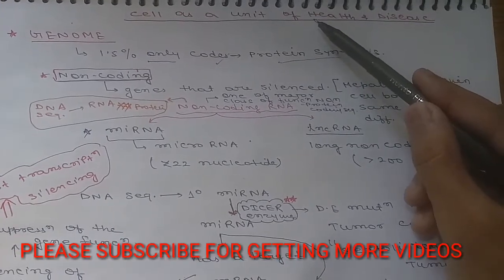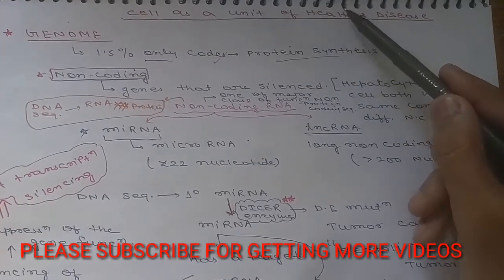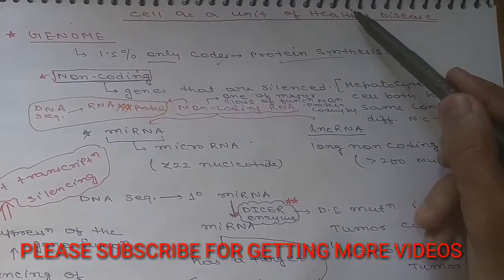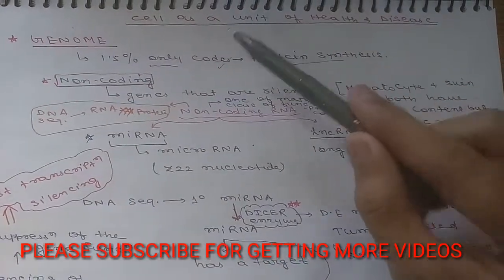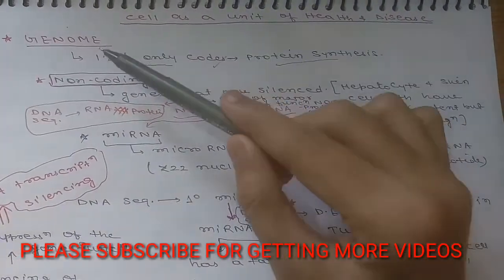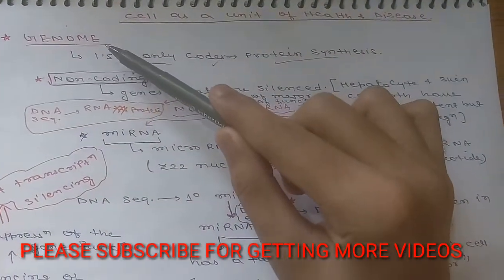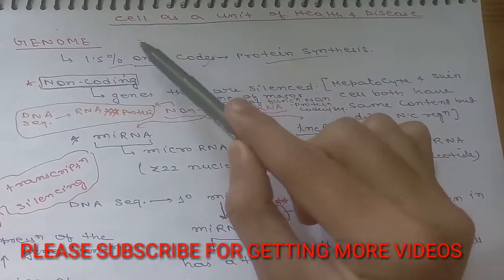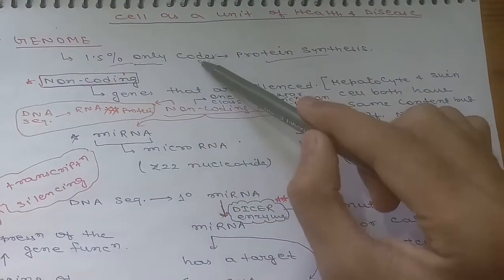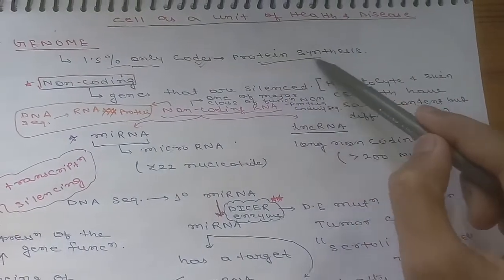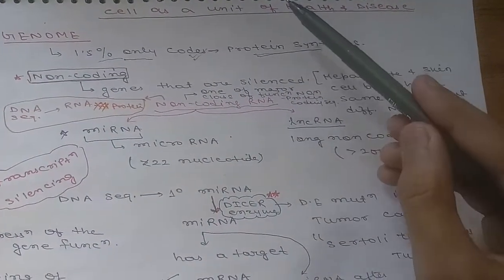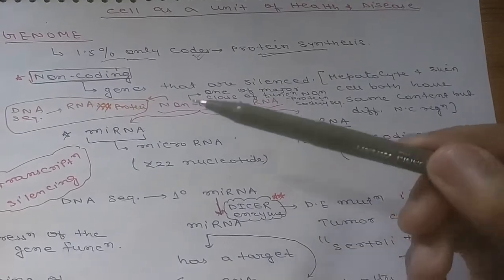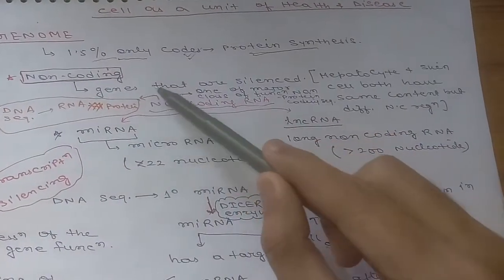Today we are going to discuss the cell as a unit of health and disease, from the pathological basis of disease, Robbins book. We will cover important points from that book. First, coming to the genome: only 1.5% of the genome codes for protein synthesis. The other parts are non-coding, meaning those genes are silenced.